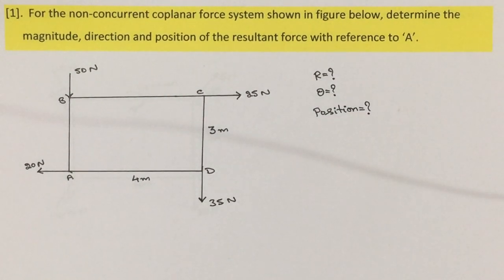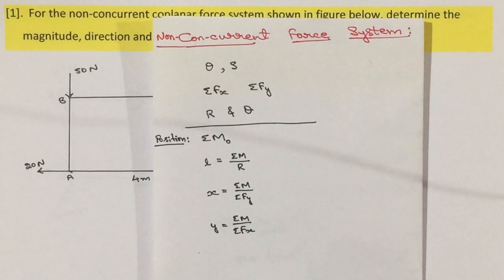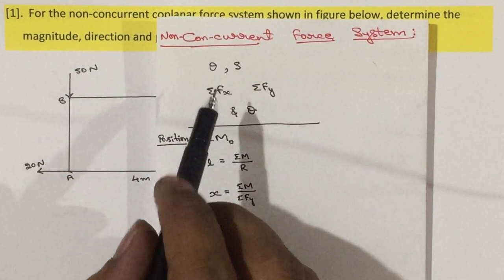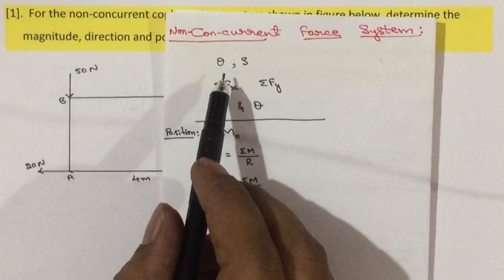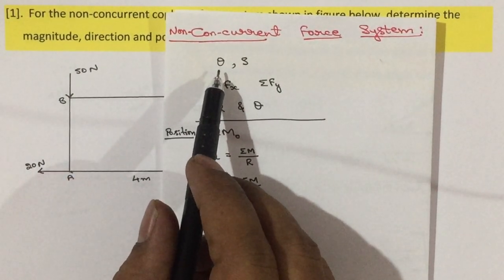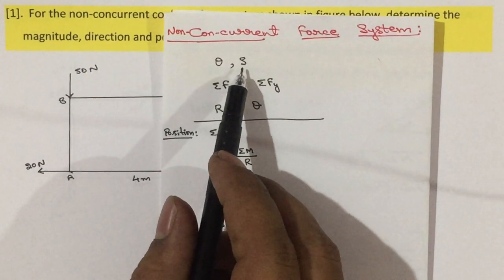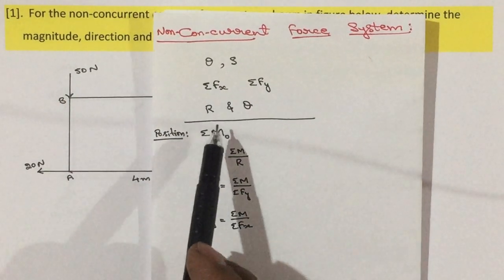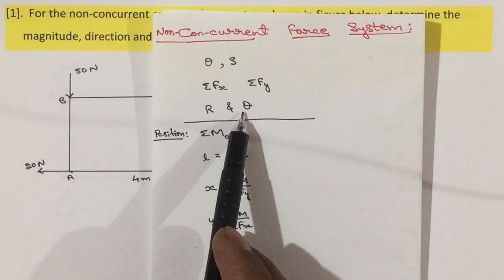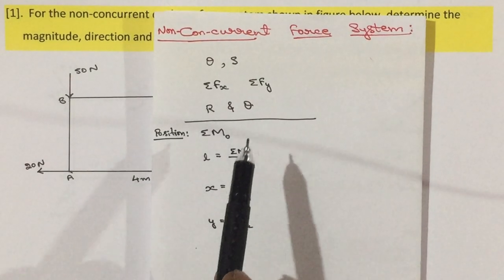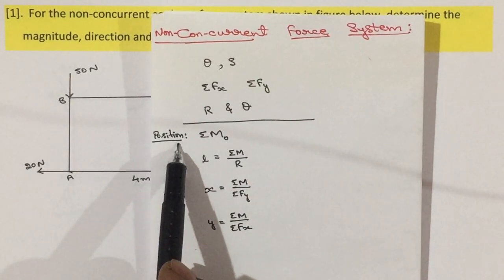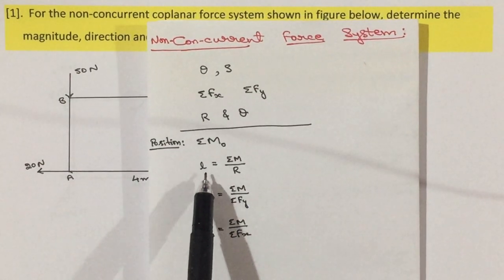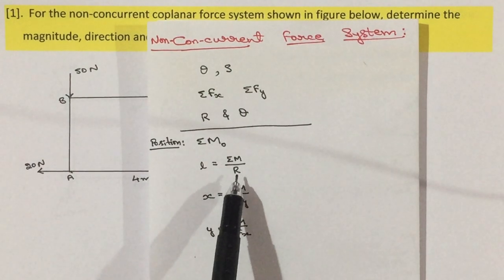To solve this problem, we have the procedure for a non-concurrent force system. It is the same as the concurrent force system: calculate the horizontal angle theta for the inclined forces, then splitting up the inclined forces, then sigma Fx and sigma Fy, then R and theta. Till now we calculate the magnitude and direction of the resultant. Then if you want the position, calculate the moment of all the forces with respect to the given point.